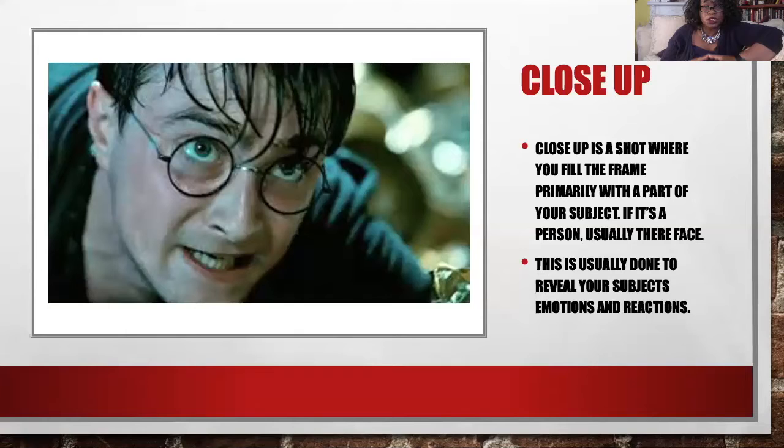The first type of shot is a close-up shot, otherwise called CU. We tend to use a lot of abbreviations when it comes to different types of camera shots. The close-up is a shot where you fill the frame, primarily with a part of your subject — if it's a person, usually their face. This is usually done to reveal your subject's emotions and reactions, typically from the head to the very top of the shoulders.